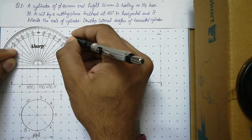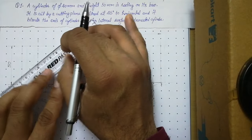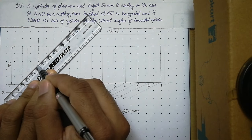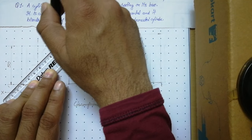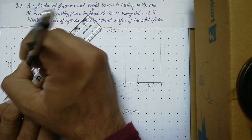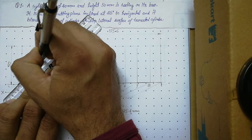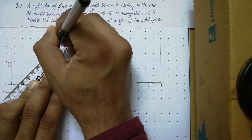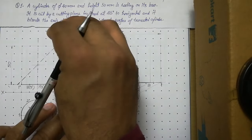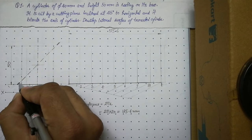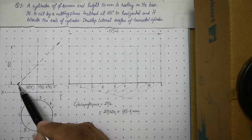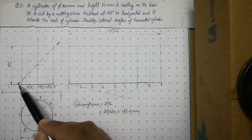Place the protractor on that baseline and draw a 45-degree angle. Then join the bisection point and the 45-degree point with a thin line, and convert that thin line into a cutting plane line. The cutting plane line is a chain thin line, thick at ends, at a ratio of either 10:1 or 6:1. The starting and last dash of the line should be outside the front view.